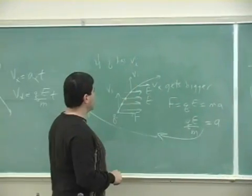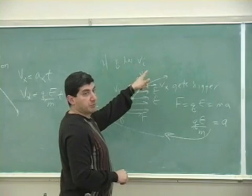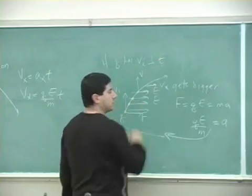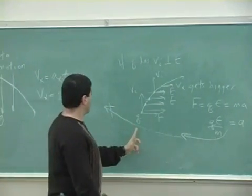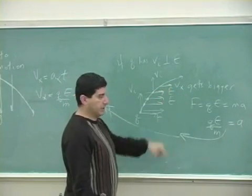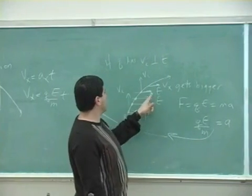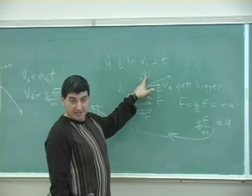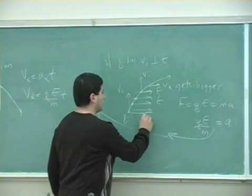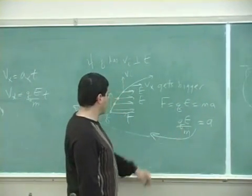If Q has a V initial, so now this is the second case, if Q has a V initial perpendicular to E. Let's say the charge is going up and all of a sudden you turn on the electric field, what will happen to it? In that case, we saw that the V initial is going to stay constant. It's not going to change because the force is going to be to the right. The force is going to be QE, which is MA, and the A is going to be QE over M.